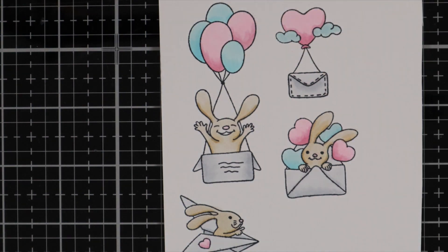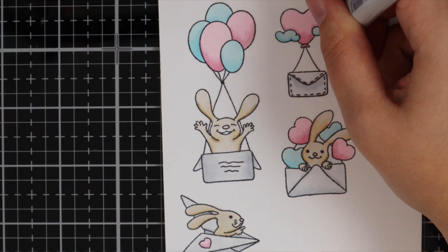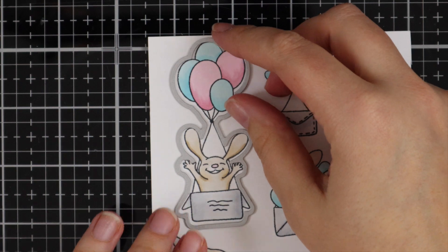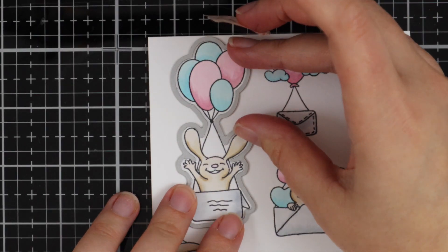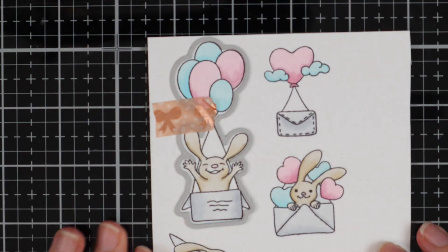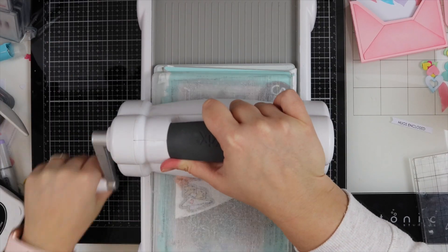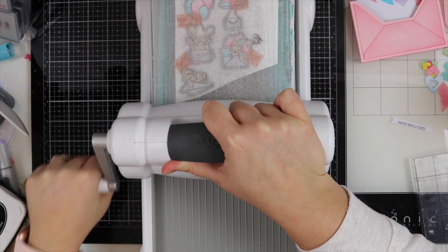So once my coloring's done, I've then got the coordinating dies. So I'm just going to pop them on, and then I just secure them down with a little bit of washi tape just to make sure they don't slip through the machine while I'm die-cutting them.